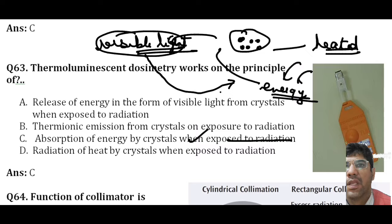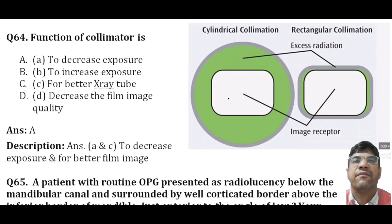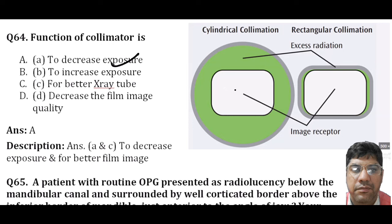The function of the collimator is to decrease radiation exposure. Collimators are used to limit the size and shape of the x-ray beam to an area that reduces unnecessary radiation to the surrounding tissue and provides better clarity.